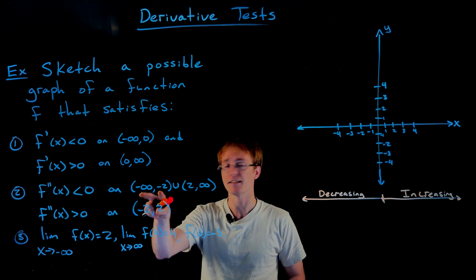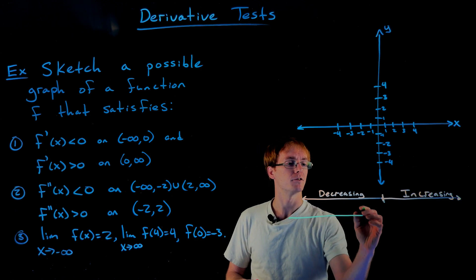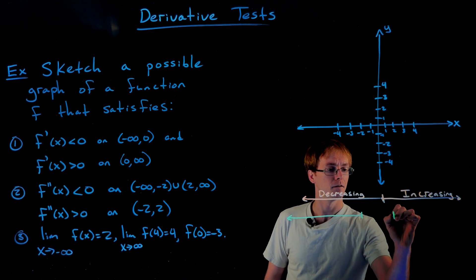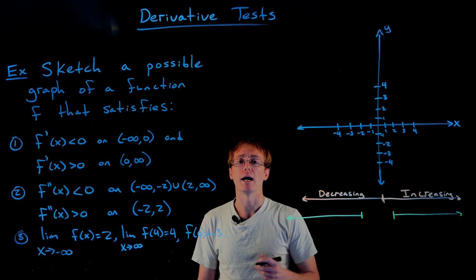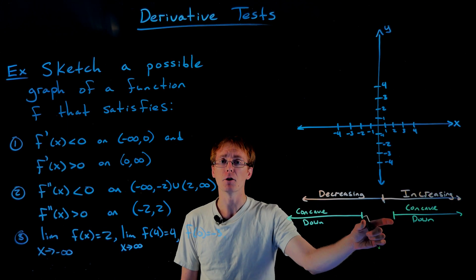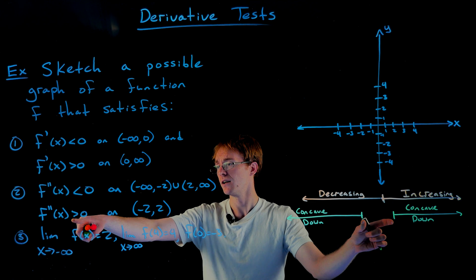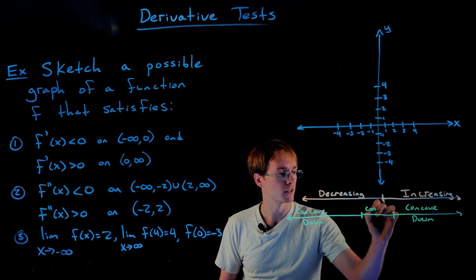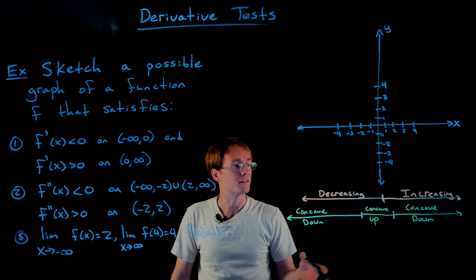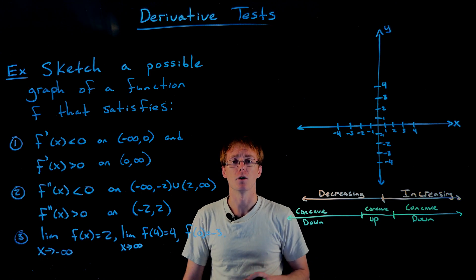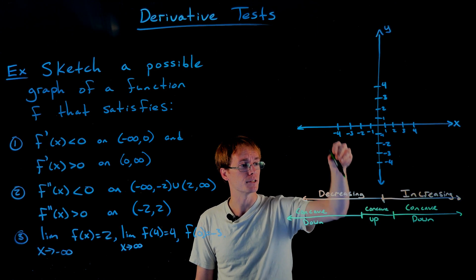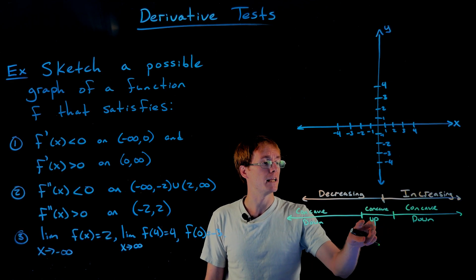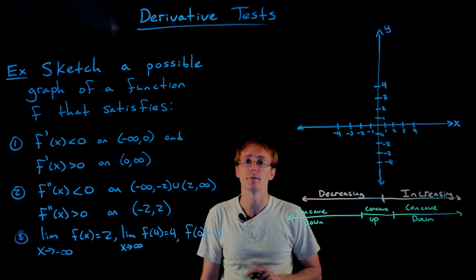On the interval from negative infinity to negative two, and also on the interval from two to positive infinity, our graph is going to be concave down. On the middle interval from negative two to positive two, the second derivative is greater than zero, so we are concave up. From these two sets of conditions we can already see that at x equals zero the function switches from decreasing to increasing, giving us a local minimum, and at x equals negative two and positive two the concavity changes, giving us inflection points.